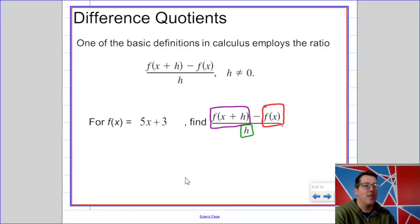So the function evaluated at x plus h means, in this case, 5 times x plus h plus 3. Or, to distribute that out, 5x plus 5h plus 3.